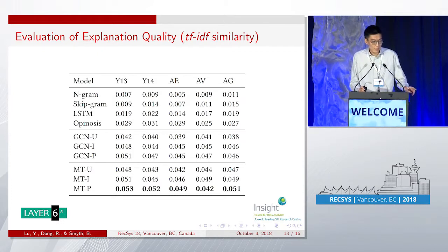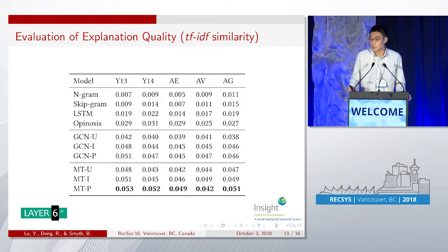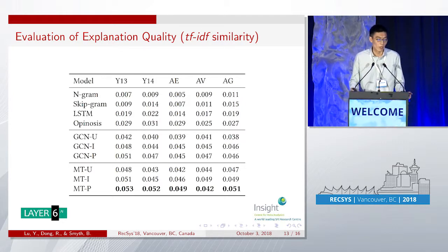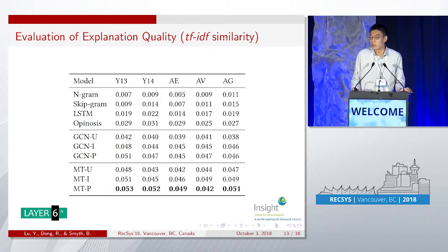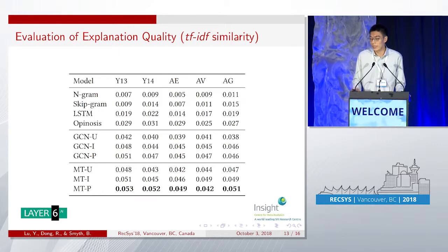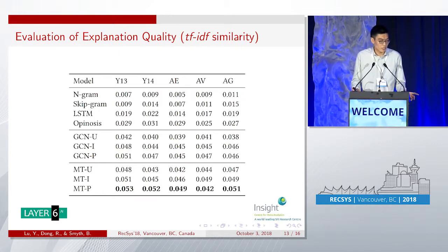We also perform an ablation study to validate the effectiveness of different components. MT-minus-encoder and MT-minus-decoder refer to the multitask learning model with the encoder and the decoder removed from the sequence-to-sequence model. As we can see, performance decreases when we remove each component, validating the effectiveness of both the encoder and the decoder.